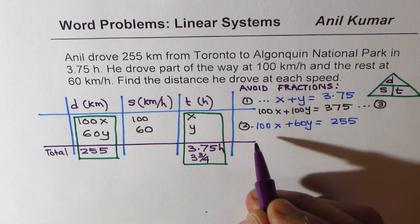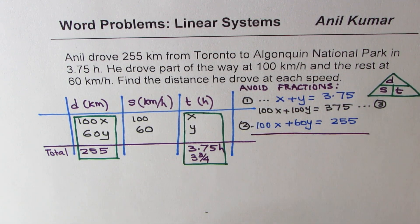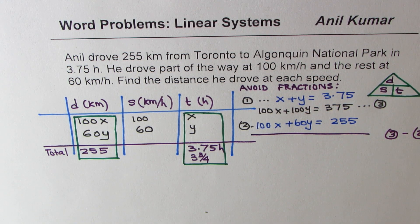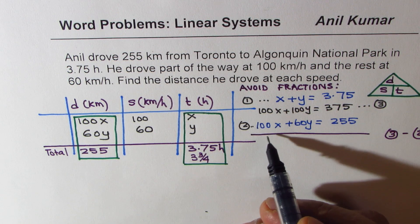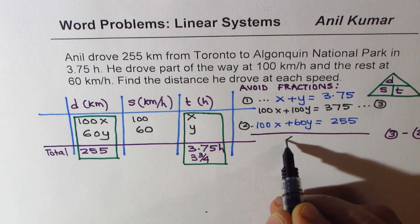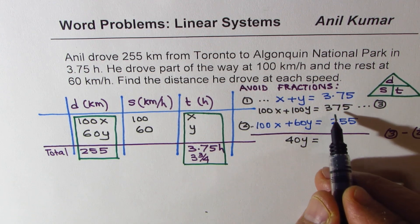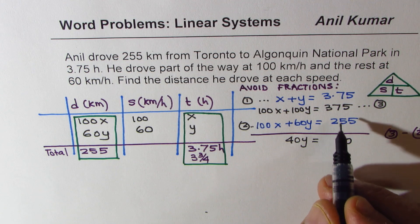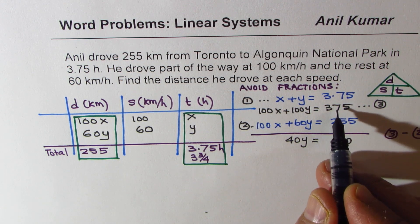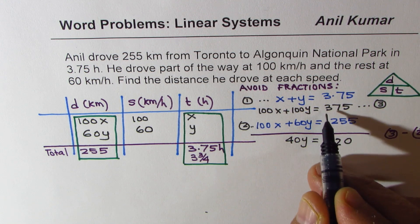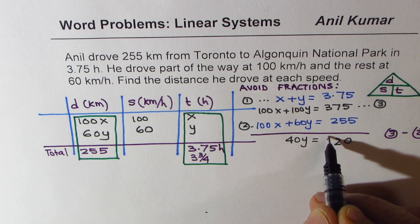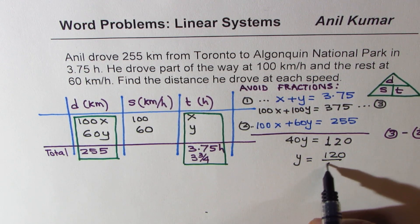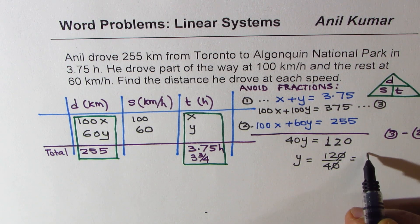Now to solve, we can just take away one from the other. So we'll do equation 3 take away equation 2. And what do we get? 100x, 100x cancel. And here we get 40y equals 375 minus 255, which equals 120. And so we get y equals 120 divided by 40, which is 3.